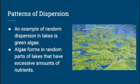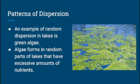An example of random dispersion in lakes is green algae. Algae forms in random parts of lakes that have excessive amounts of nutrients. This is random because the algae will not always have a set place to grow, and the nutrients they need will be in different places throughout the lake.